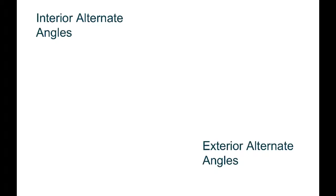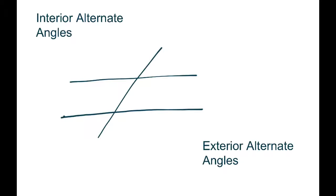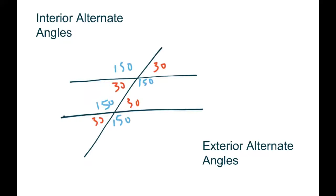There are two more sets of angles to be aware of. The first is interior alternate angles. Let me put the diagram back — if this angle is 150 degrees, then we know this one is 30 and the opposites have to be the same. So we have 150, 30, 30, and 150. When all angles match perfectly, add up to 180, and all corresponding ones are the same, we know those two lines have to be parallel. Supplementary angles are side by side and add up to 180.